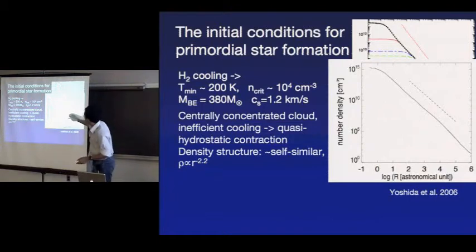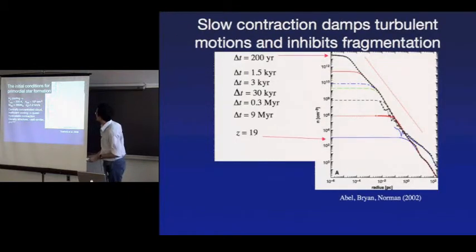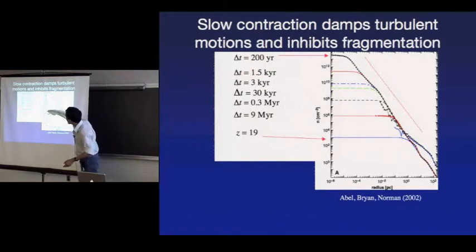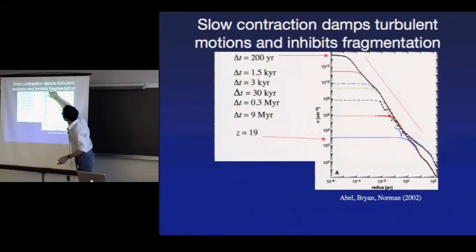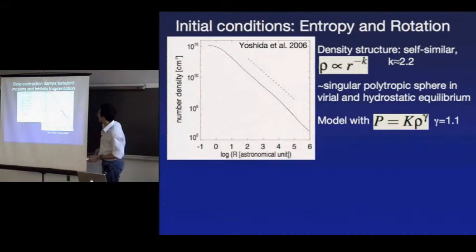These are the latest simulations by Yoshida et al., reaching densities of 10^{15} hydrogen atoms per cubic centimeter, and again seeing that structure. Just to emphasize: this was at redshift 19, this is 9 million years later, and then the time step is getting shorter — there's a 200-year difference between here and here, a very slow, gradual process.